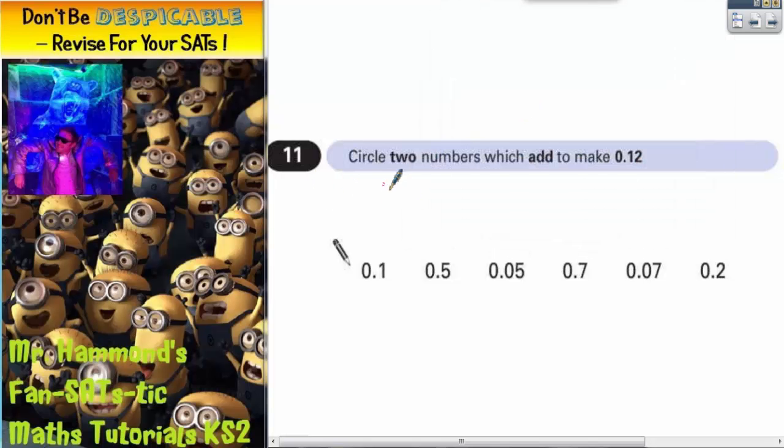Question 11. Circle two numbers which add to make 0.12. Now the first thing we notice is that some of these decimals have only got one decimal after the point and some have got two decimals after the point.